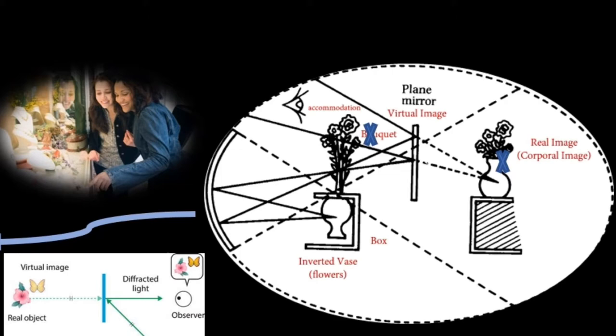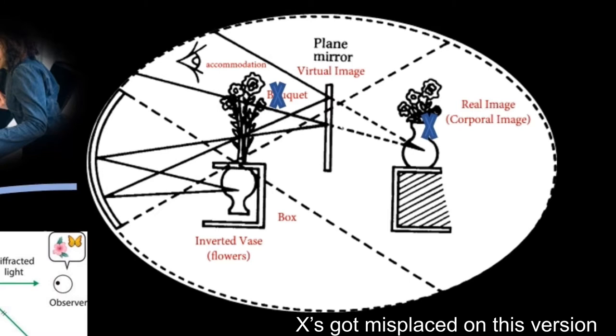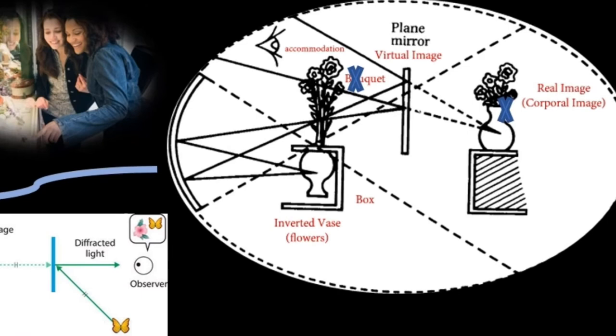Next, you may notice that I have put an X over the imaginary and real image labels. I believe I made an error in the last video, mixing up the real image with the virtual one in my presentation on the optical schema. I interpreted the flowers in the vase on the right side as the real image because it would be invisible to the eye. However, it turns out that the flowers and vase on the right are intended to represent what the eye is seeing.